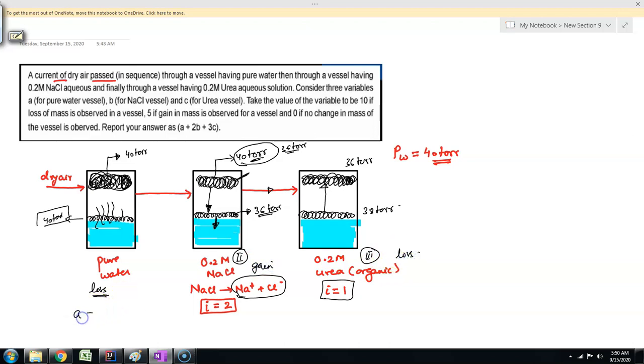A value will be for gain, they are saying take variable to be 10 if loss of mass is observed, which is the case here. So A will be 10. What is B? If gain of mass, so B is equal to 5. And C again is a loss which is equal to 10. So we were supposed to find the value of A plus 2B plus 3C. So it comes out to be 10 plus 10 plus 30, which is equal to 50.